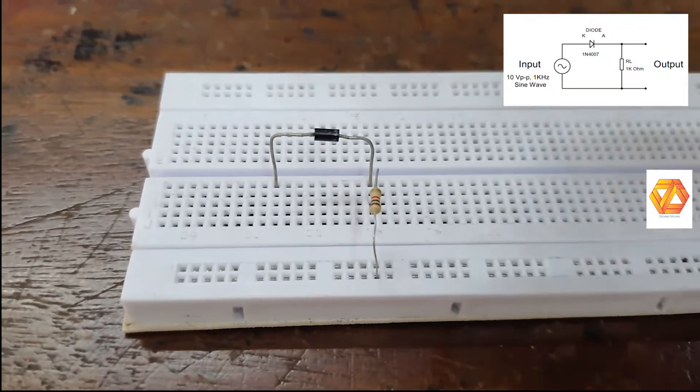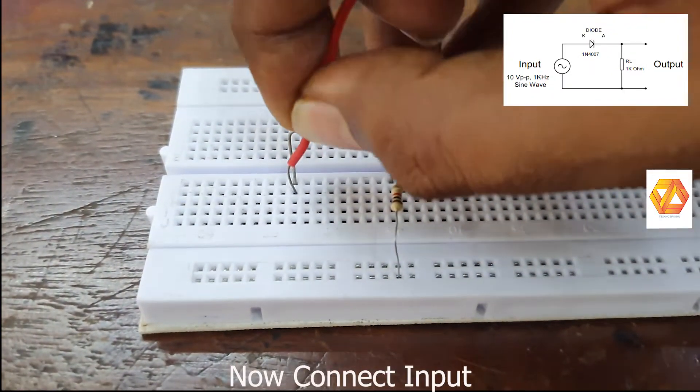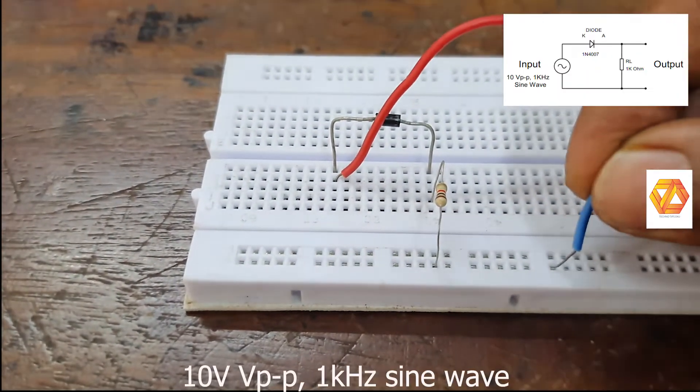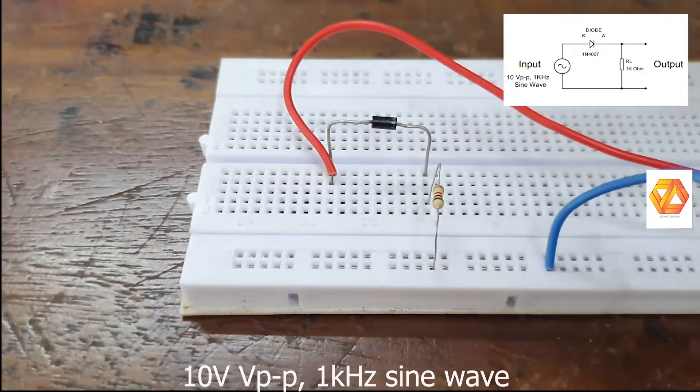Now our series connection is over. Then connect the input. We are giving a 1 kilo-hertz, 10 volt peak-to-peak sine wave as the input to this circuit.